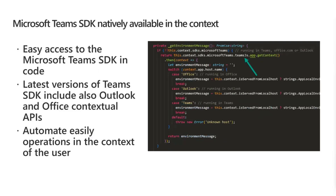What's also really cool is that there's native access to the Microsoft Teams SDK. Within the context of your web part — which is now a Microsoft Teams personal application — you can directly access the Teams SDK and get information from it. You can simply do `this.context.something` and get access to information available within your code. Incredibly easy.